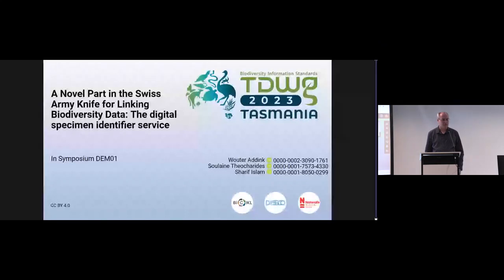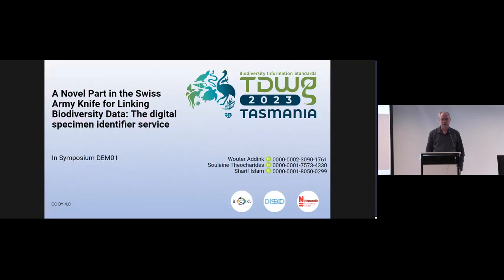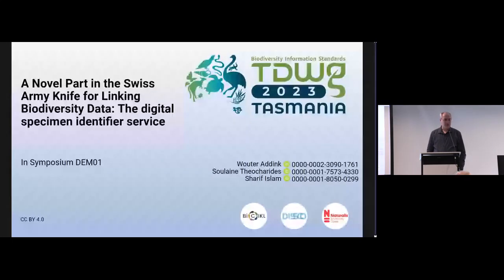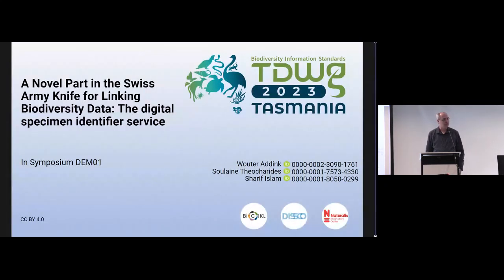One of the objects that we want to connect with other infrastructures are the specimens. We want to connect the specimen data with sequence data derived from them, connect the specimen types with names in the Catalogue of Life, etc. But we have a problem: we don't have persistent identifiers. We need identifiers that are really persistent because our collections remain relevant for hundreds of years.